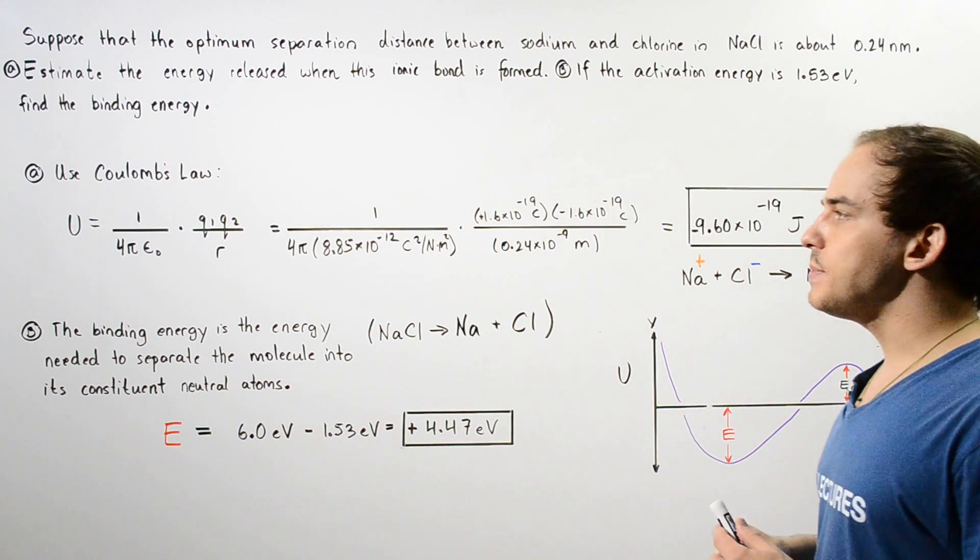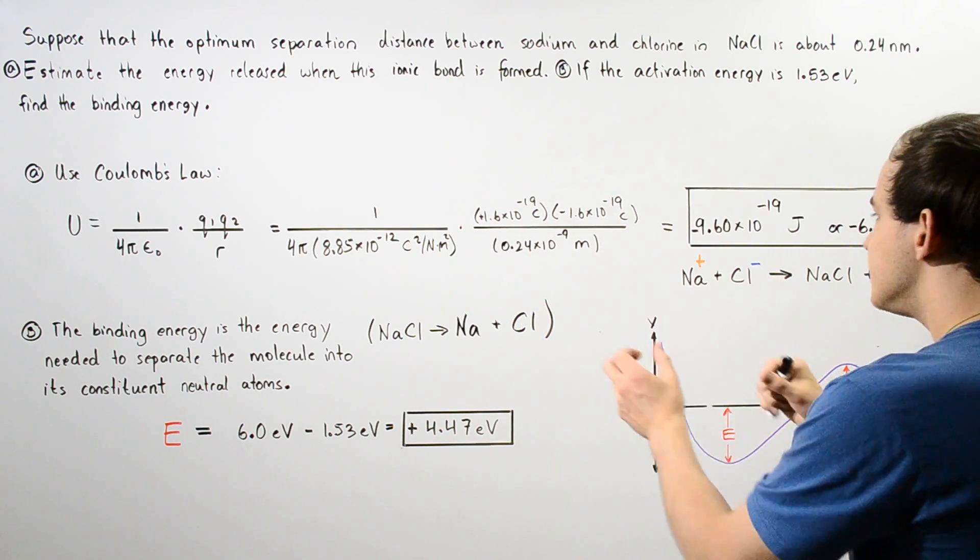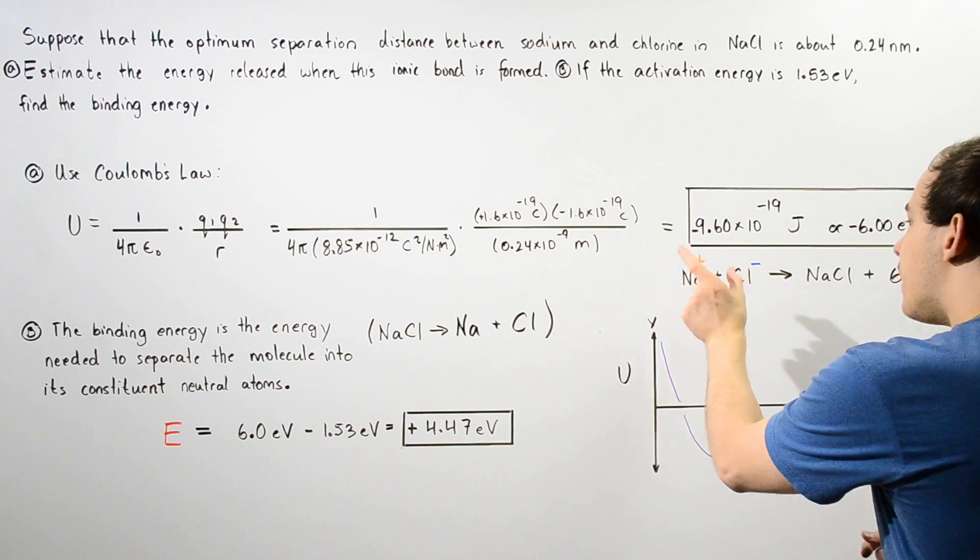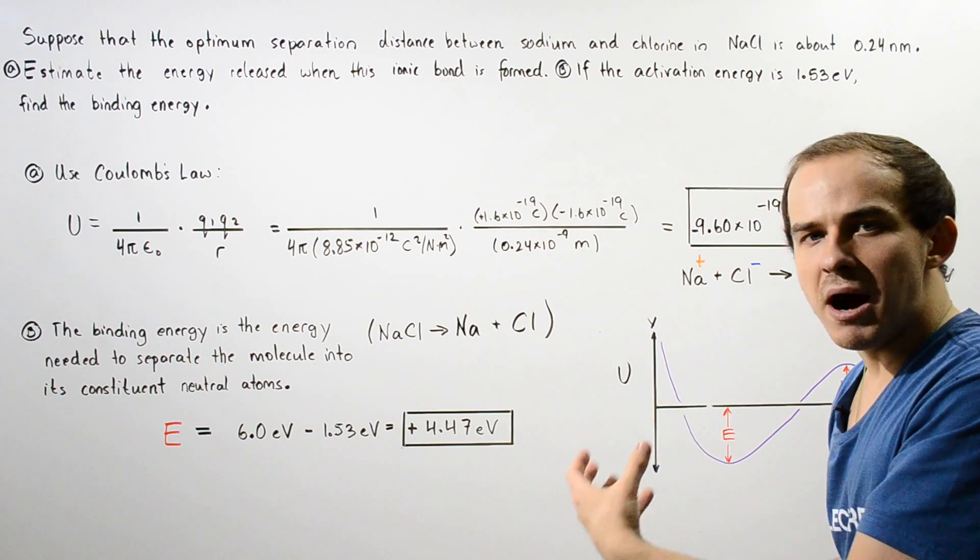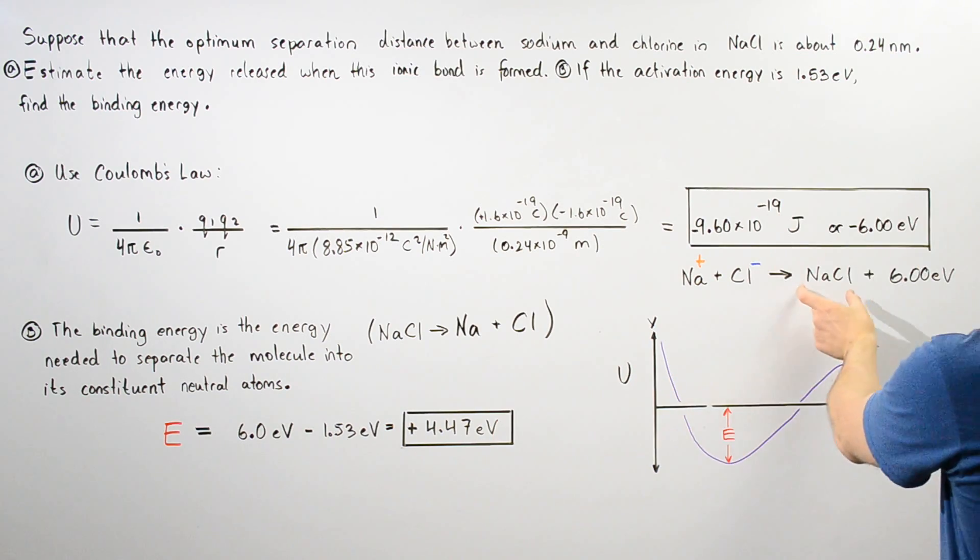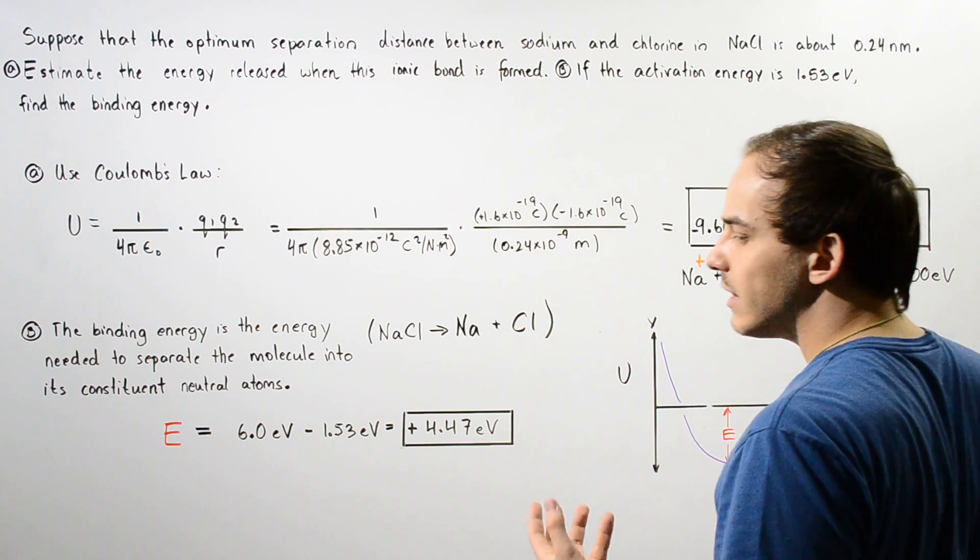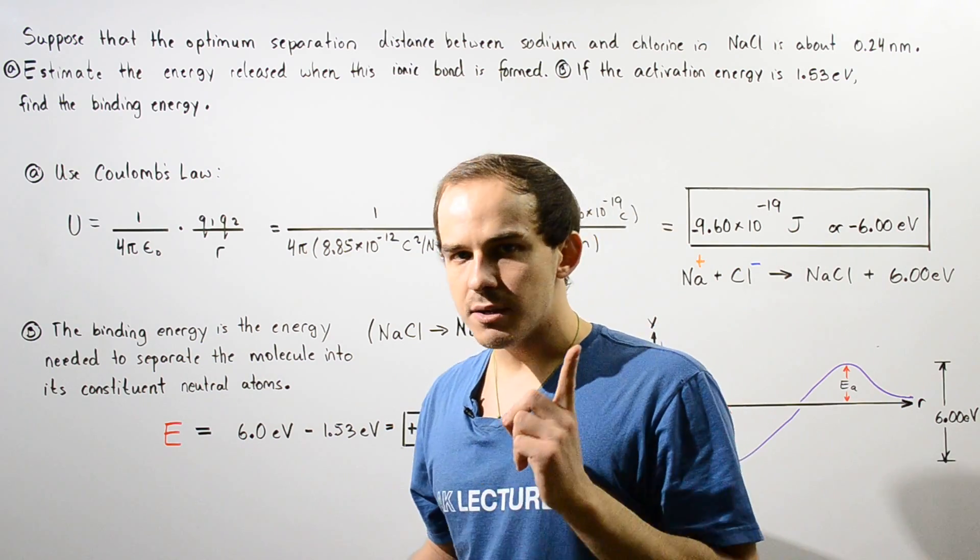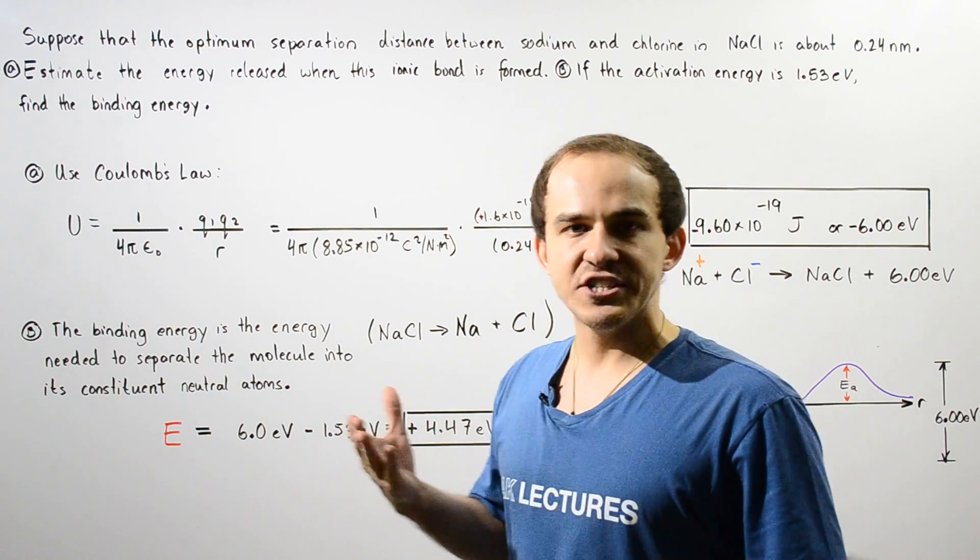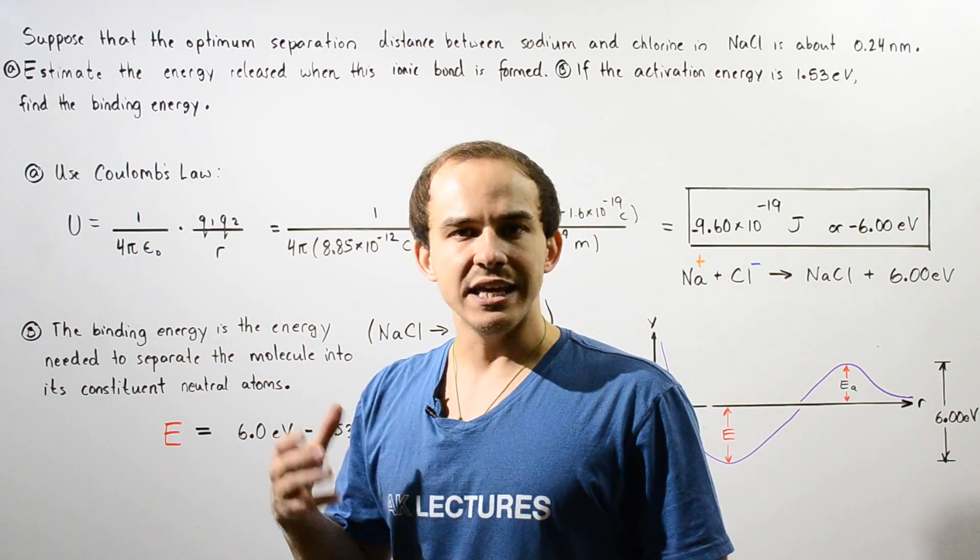Let's begin with part A. Basically, we want to calculate the amount of energy that is released when the positively charged sodium ion combines with the negatively charged chlorine atom to form our sodium chloride molecule. To calculate this energy, we're going to make the assumption that these two ions are stationary point charges, and that will allow us to use Coulomb's equation.